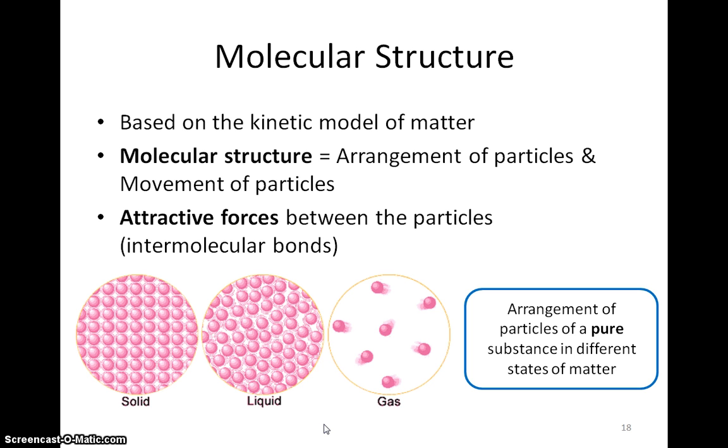We always assume it is pure unless the question says that it is impure. The shaded circles represent the atoms or molecules of the substance. Since it is a pure substance, there is only one type of atoms or molecules.